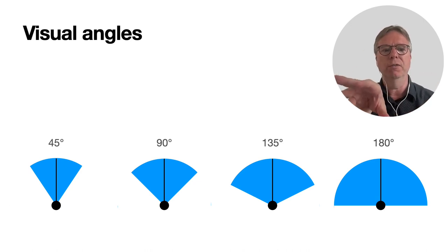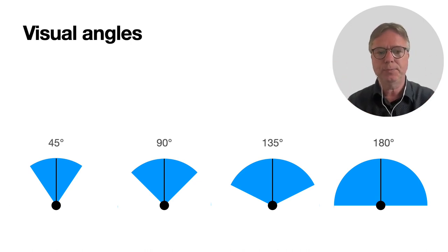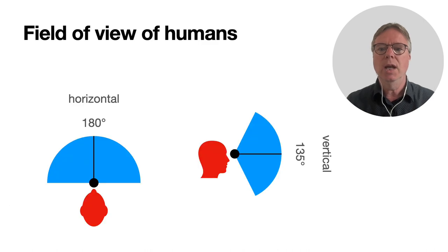You can see a bunch of examples. For example, on the right, 180 degrees - that's almost what we see. If we go into what is the field of view of humans, on the left is the horizontal view, and it's maybe even more than 180 degrees.